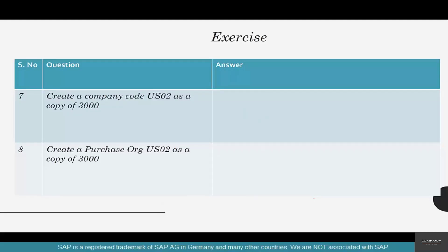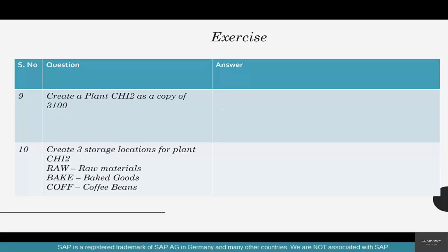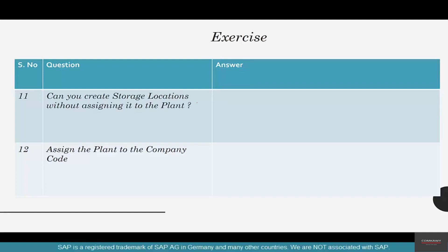Number seven: create a company code US02 as a copy of 3000. It's really easy — just like how you copied US01 from 3000, do another company code US02 from 3000. You can also create a copy of purchase org US02 from purchase org 3000. Same thing: create a plant CHI2, create three storage locations, and assign them to CHI2. Can you create storage locations without assigning them to a plant? No.